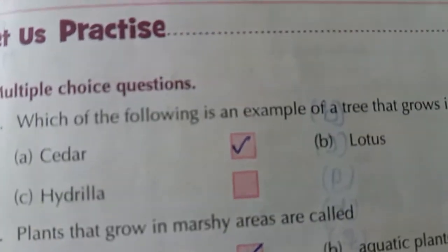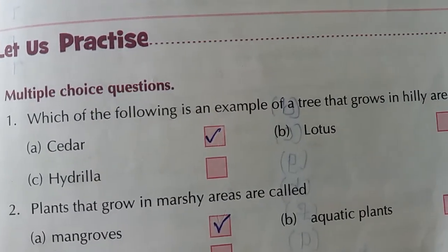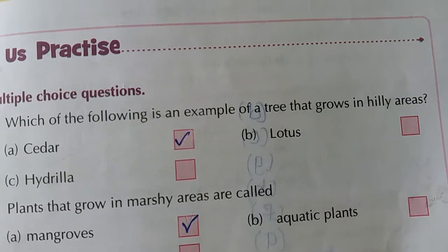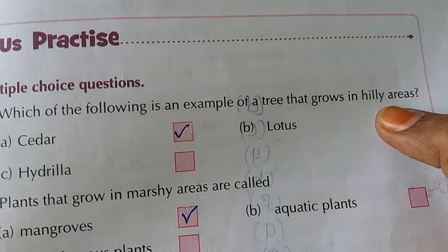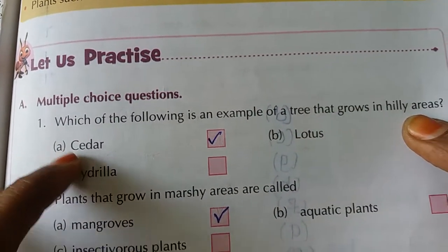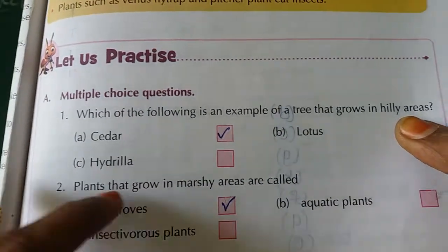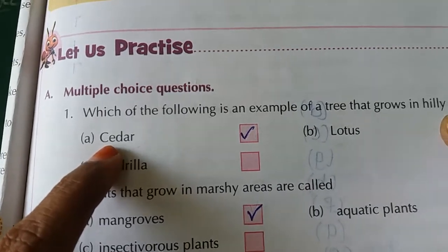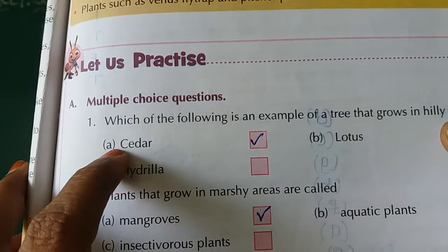Here multiple choice questions are given. Read the first question: which of the following is an example of a tree that grows in hilly areas? Cedar grows in hilly areas. Lotus grows in water. Hydrilla grows underwater. So the correct option is cedar - option A, correct.